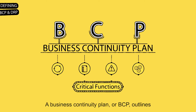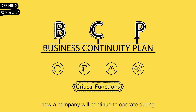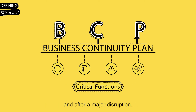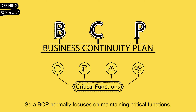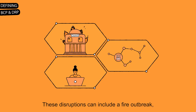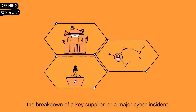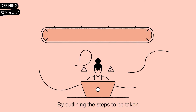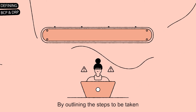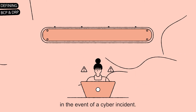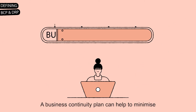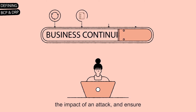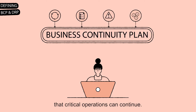A Business Continuity Plan, or BCP, outlines how a company will continue to operate during and after a major disruption. A BCP normally focuses on maintaining critical functions. These disruptions can include a fire outbreak, the breakdown of a key supplier, or a major cyber incident. By outlining the steps to be taken in the event of a cyber incident, a Business Continuity Plan can help to minimise the impact of an attack and ensure that critical operations can continue.